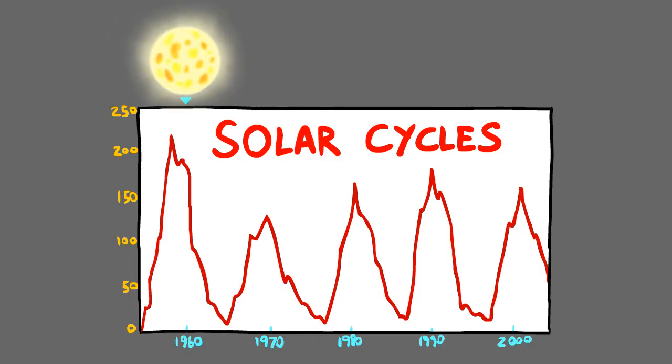We've even discovered solar cycles, patterns in the occurrence of solar storms that rise and fall every 11 years.